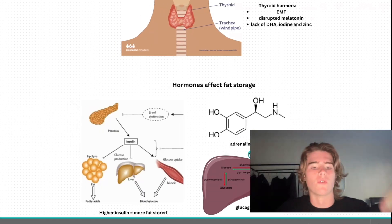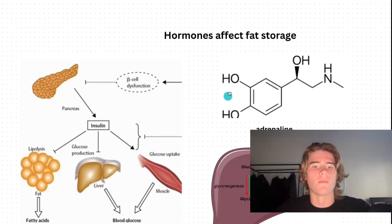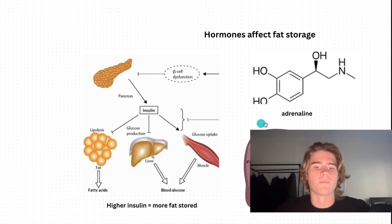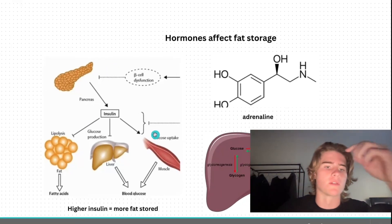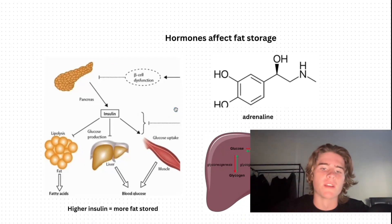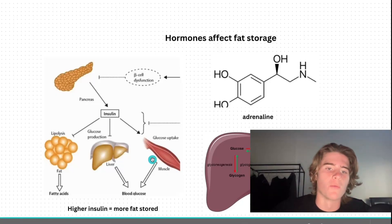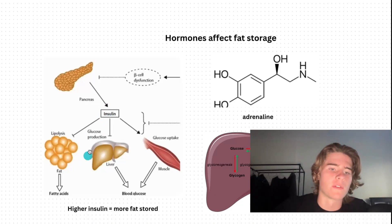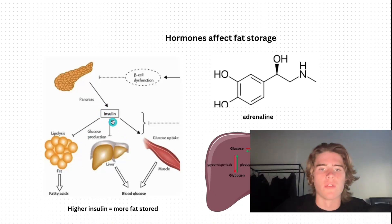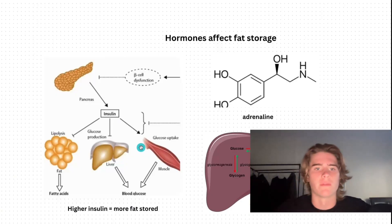And lastly, we have hormones. When insulin is higher, you're going to store more fat. This means that if you consume 300 calories of pure sugar compared to 300 calories of fat, because your insulin is going to be way higher from the sugar, you're going to promote fat storage, inhibit fat metabolism — lipolysis — and promote fat creation and fat storage.